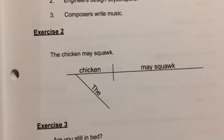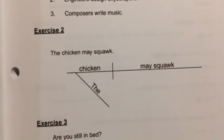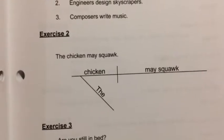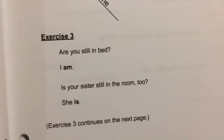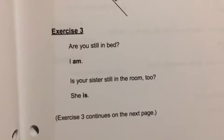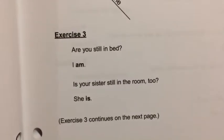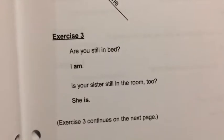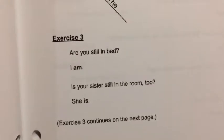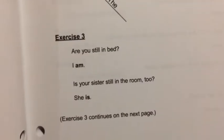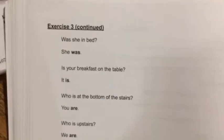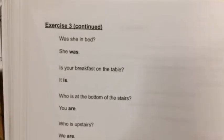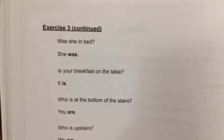Remember, in class we talked about how state-of-being verbs just show that you exist, or that something exists. We read some really boring little sentences. Look at exercise three — these are like the ones we did in class. Are you still in bed? I am. I am is a complete sentence — it has a verb and a subject. Is your sister still in the room too? She is. She is is also a complete sentence; it just has the state-of-being verb is.